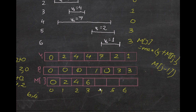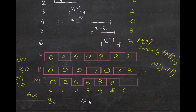For j=4: V4 is 7. So 7 plus M[P[4]], P[4] is 0, so M[0] = 0. That gives 7. And M[j-1] is M[3] = 6. The maximum of 7 and 6 is 7, so M[4] = 7. For j=5: after computing, we get M[5] = 8. For j=6: V6 is 1. So 1 plus M[P[6]], P[6] is 3, so M[3] = 6. That gives 7. And M[j-1] is M[5] = 8. The maximum of 7 and 8 is 8, so M[6] = 8.